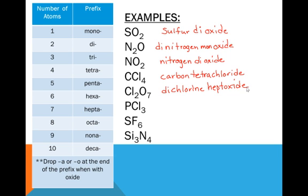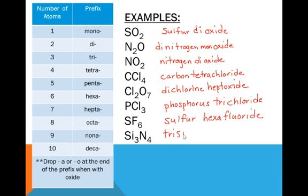Next one is phosphorus. Three chlorines makes it trichloride. Next one, SF6. Sulfur. Six is hexafluoride. Then we have tri for three silicons. Trisilicon. And four nitrogens would be tetranitride.